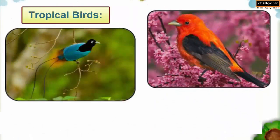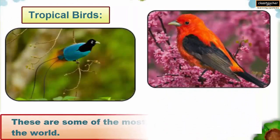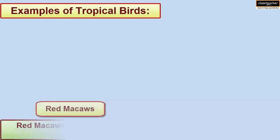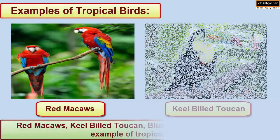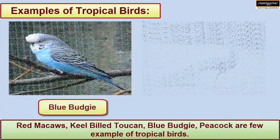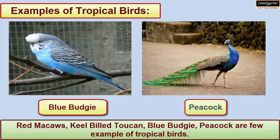Tropical Birds: These are some of the most beautiful birds of the world. Red macaws, keel-billed toucan, blue budgie, and peacock are a few examples of tropical birds.